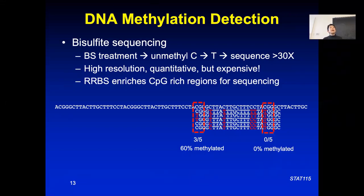How do we detect DNA methylation? There are earlier approaches, though they can be tricky experimentally. The really high-accuracy DNA methylation approach now is called bisulfite sequencing. Basically, you get the DNA from the cell, isolate it, and then treat the DNA with a bisulfite reagent.